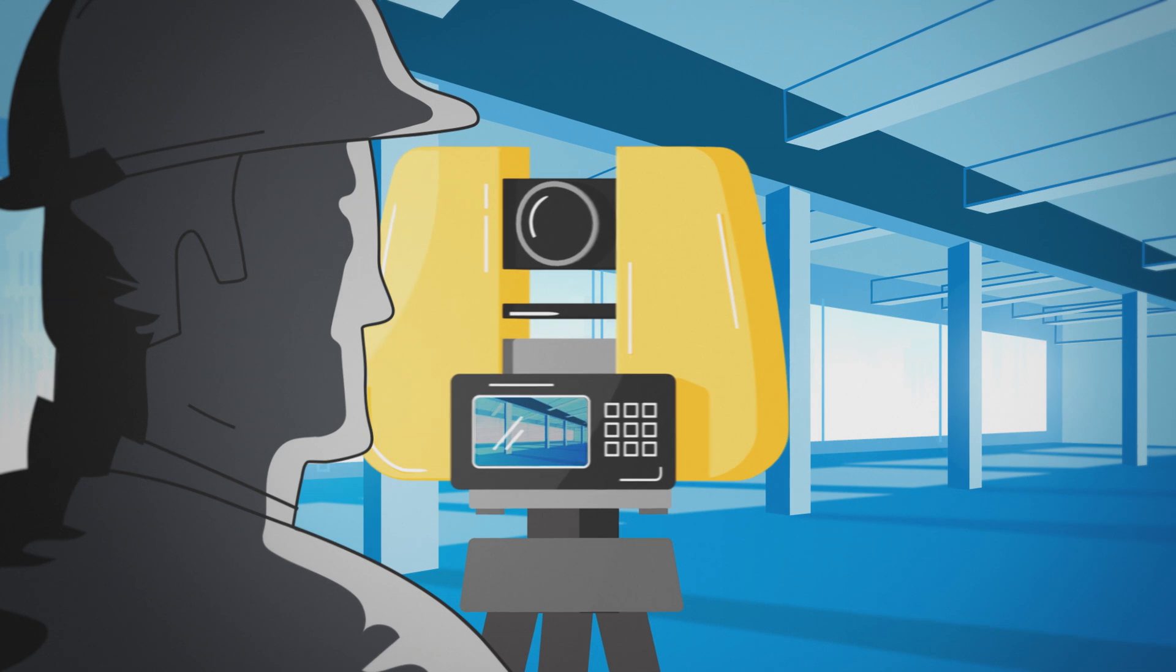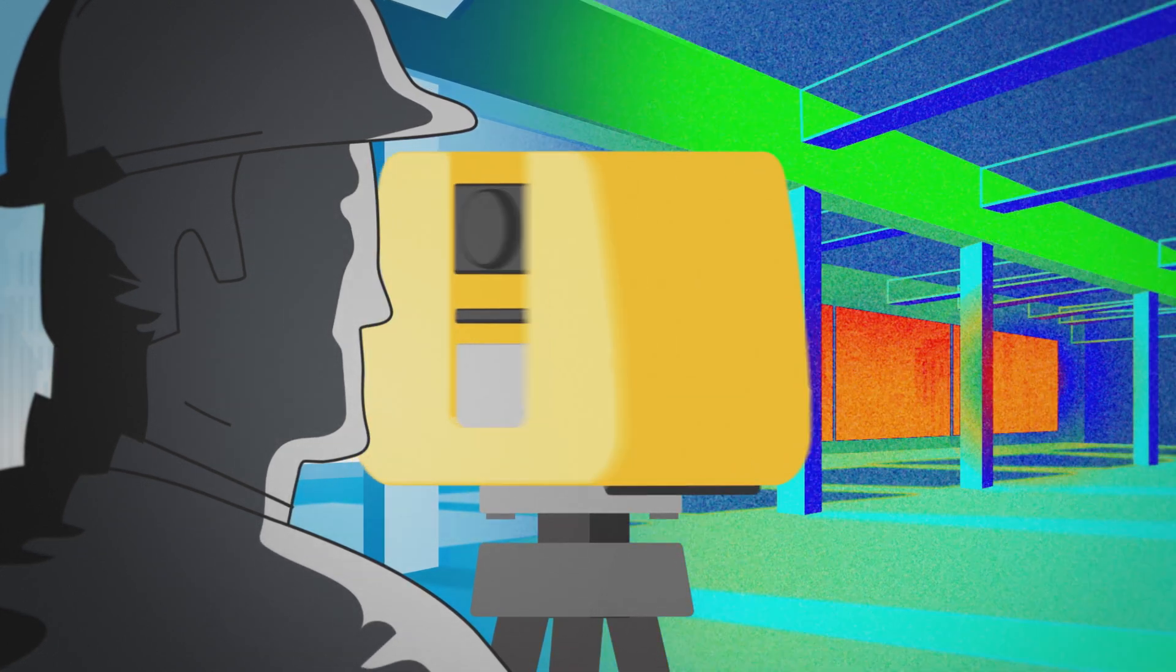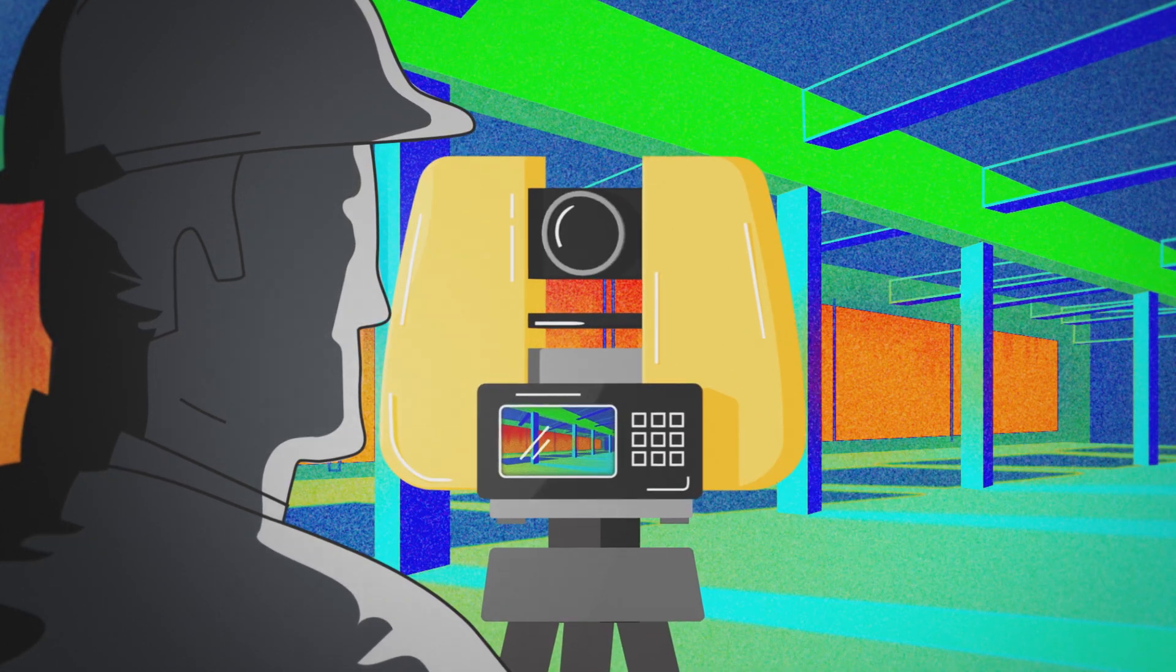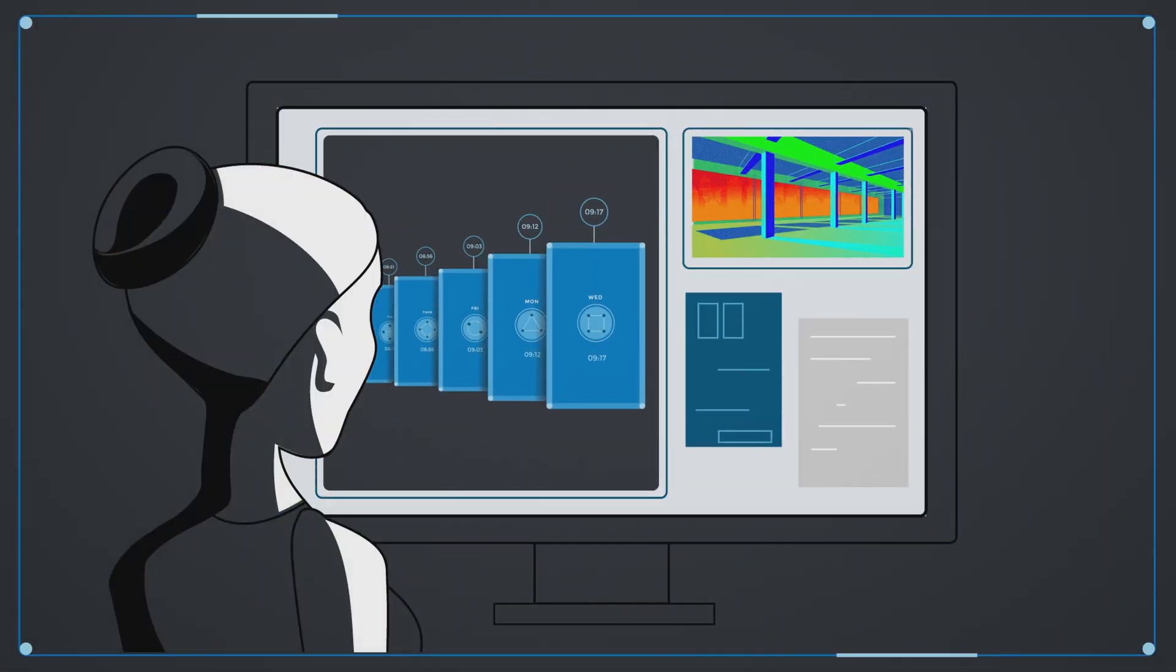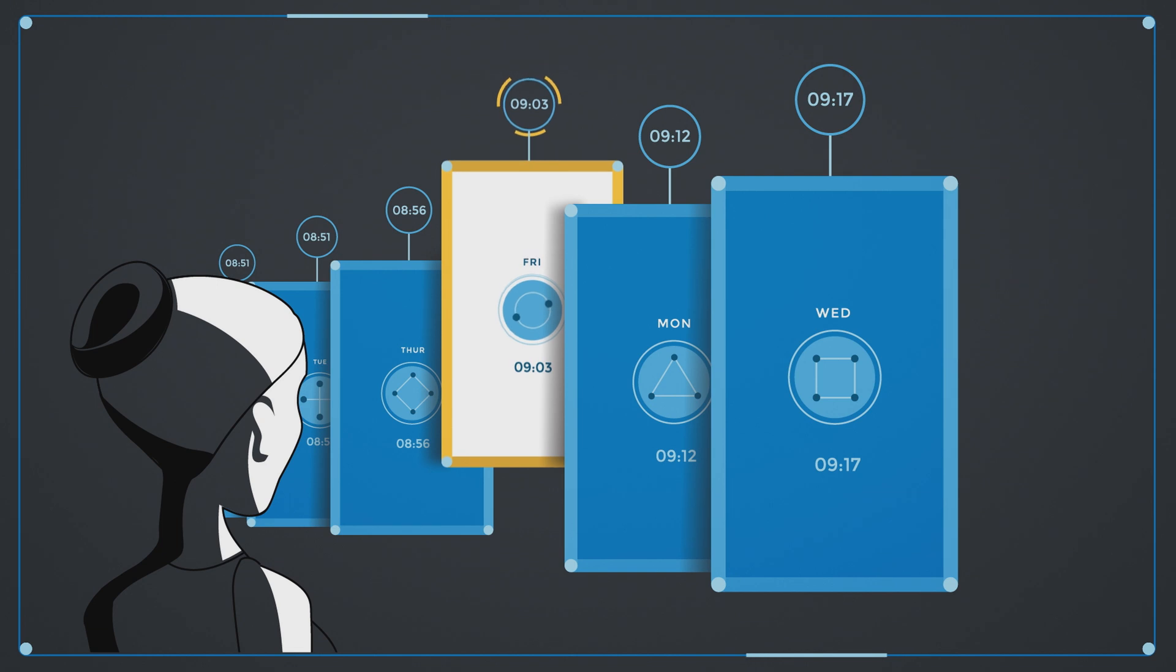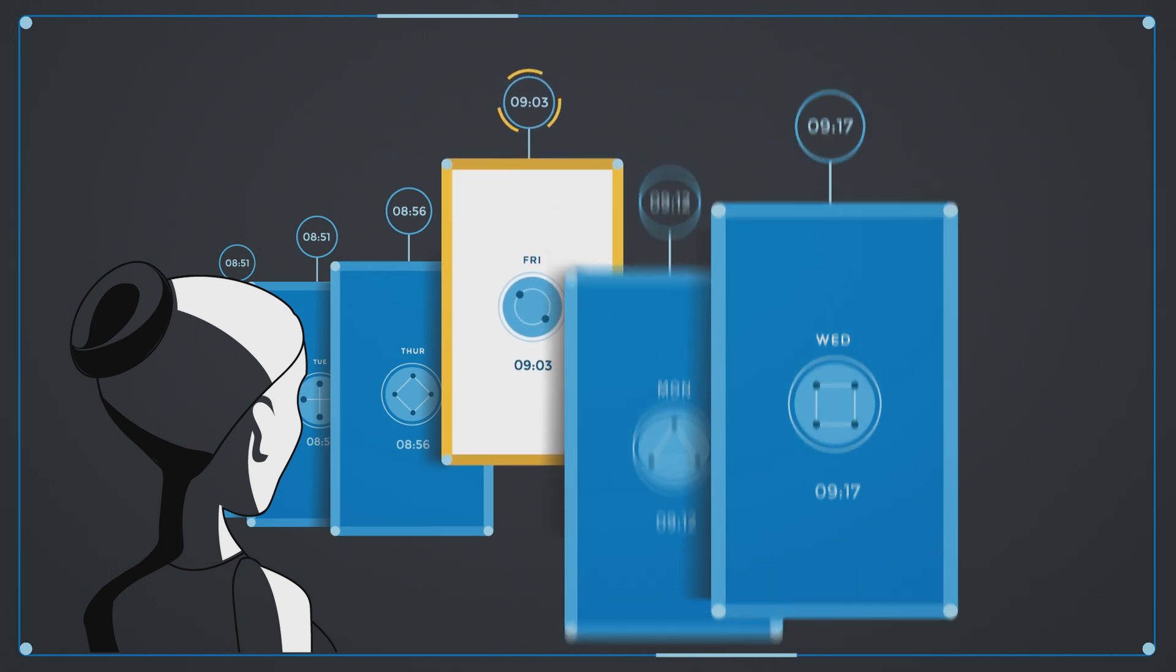Laser scanners are invaluable in these situations because they allow contractors to record progress and compare data to the original model. If a discrepancy arises, the contractor can simply reference historical scans and identify the issue.